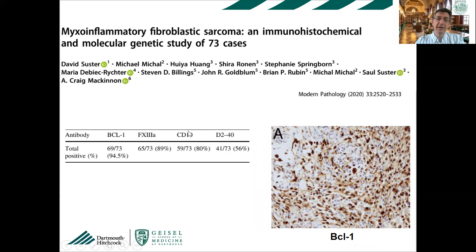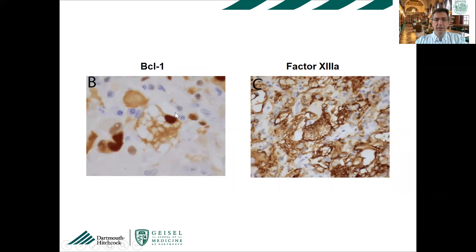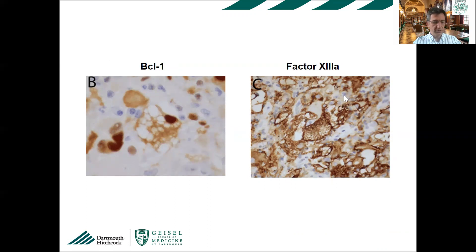CD10 is not specific at all — people use it for AFX. Especially on superficial biopsy, MIFS can resemble AFX, which could be misleading. But combining it with factor XIIIa (usually negative in AFX) and D2-40, in the right clinical-pathologic context, these stains may help make an accurate diagnosis. Regarding pathogenesis: a small minority show unbalanced translocation with TGFBR3-OGA (formerly MGEA5), which doesn't transcribe a functional protein but leads to upregulation of NPM3 and FGF8. A subset also has BRAF translocations or amplification, and a commercially available BRAF probe can assist diagnosis.